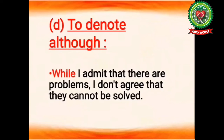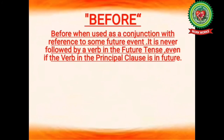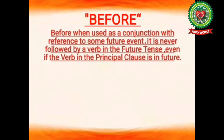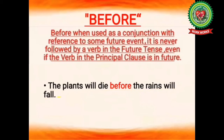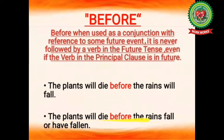The next conjunction is 'before'. When 'before' is used as a conjunction with reference to a future event, it is never followed by a verb in the future tense, even if the verb in the principal clause is in future tense. If the principal clause is in the simple future tense, the subordinate clause will be in simple present tense. Example: 'the plants will die before the rains will fall' is incorrect. The correct statement is: the plants will die before the rains fall or have fallen.